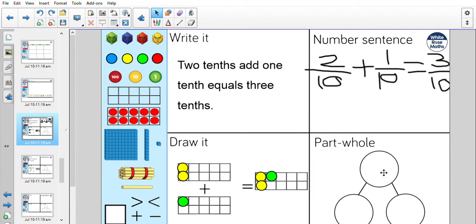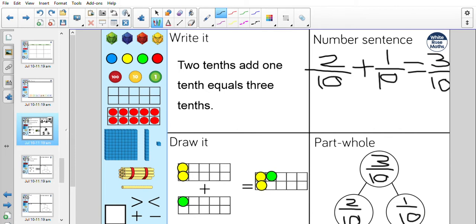Now on a part-part-whole, we know the whole is equal to three tenths, as we've just proved. So I can start with my whole as three tenths. And the two parts making up that are two tenths and one tenth. Okay, moving on to the next slide.